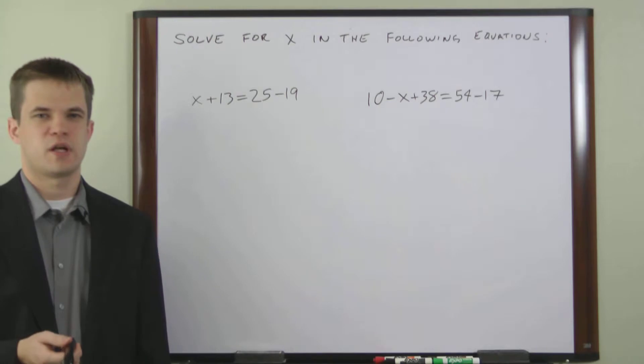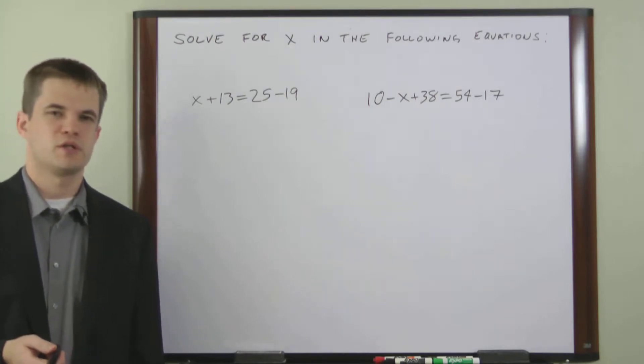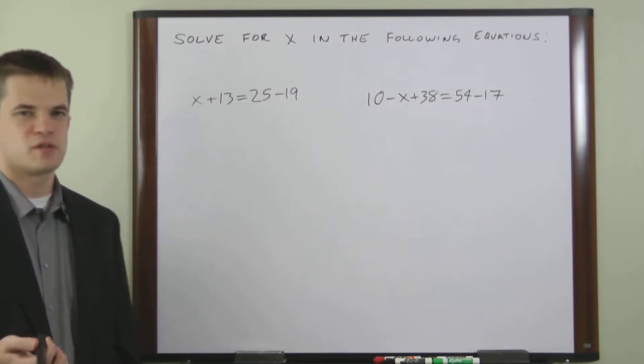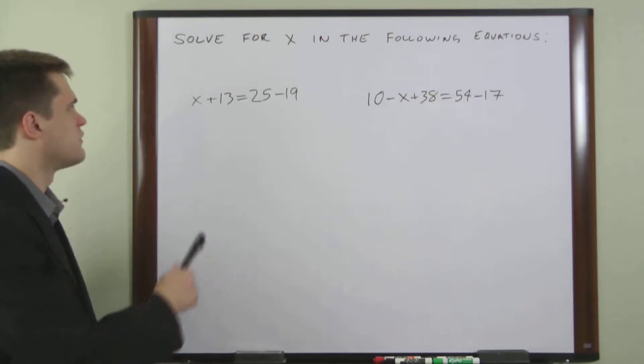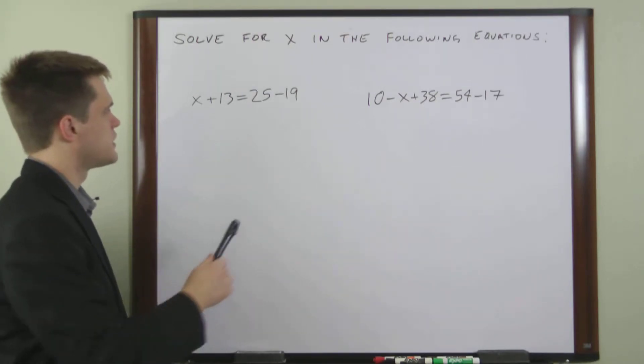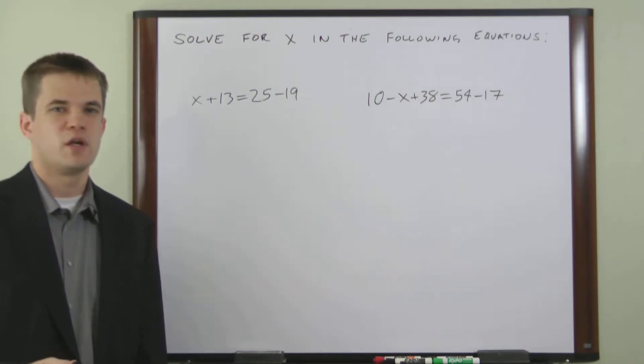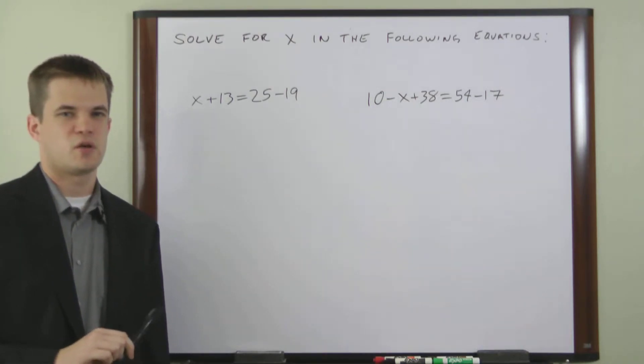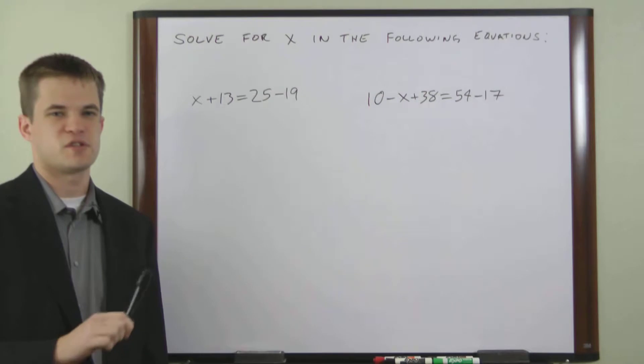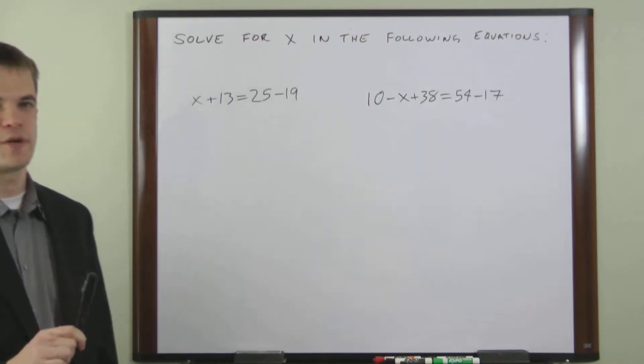One of the most basic concepts in algebra is the single variable equation. A single variable equation consists of a variable, usually x, and some other numbers. All you have to do to solve it is isolate x on one side of the equation by performing the same operations to both sides of the equation. So let's look at some examples here.